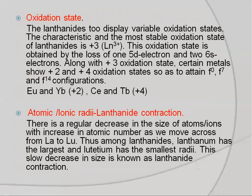The most common oxidation state of lanthanides is +3, obtained by the loss of one 5d electron and two 6s electrons. If it contains a 5d electron, then the electron will be lost from the 5d orbital; if not, then from the 4f orbital. The oxidation state is not only +3 — some elements also show +2 and +4 oxidation states to attain empty (f⁰), half-filled (f⁷), and fully-filled (f¹⁴) configurations.